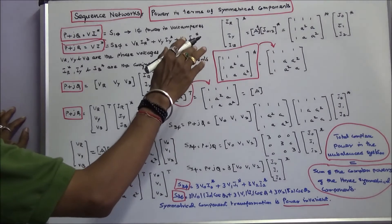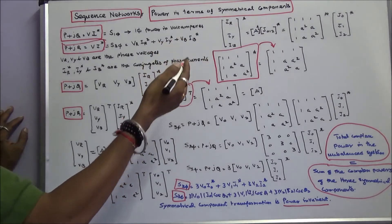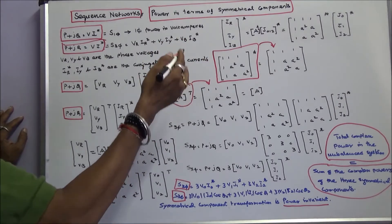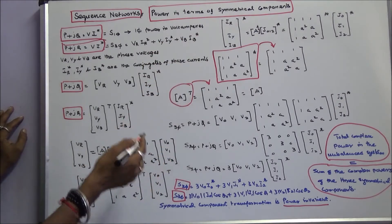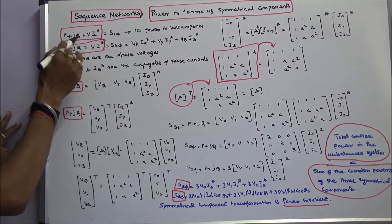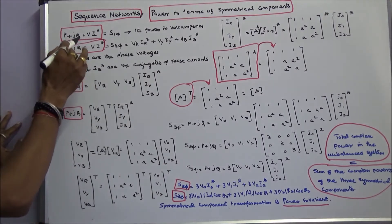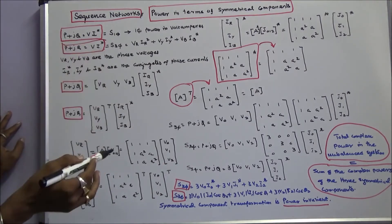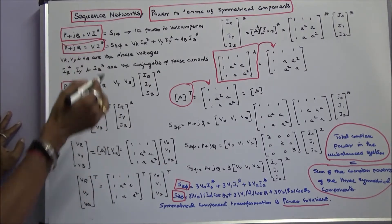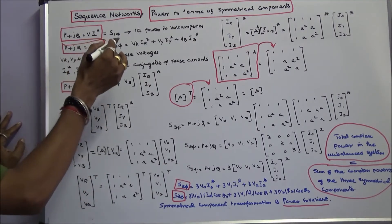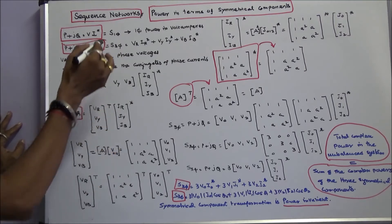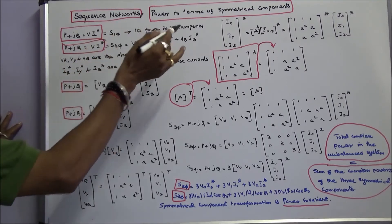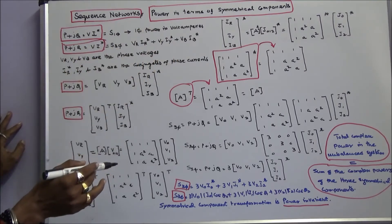In this class, we discuss power in terms of symmetrical components. The single-phase apparent power is given by P plus jQ equals V times I conjugate. Its unit is volt-amperes.